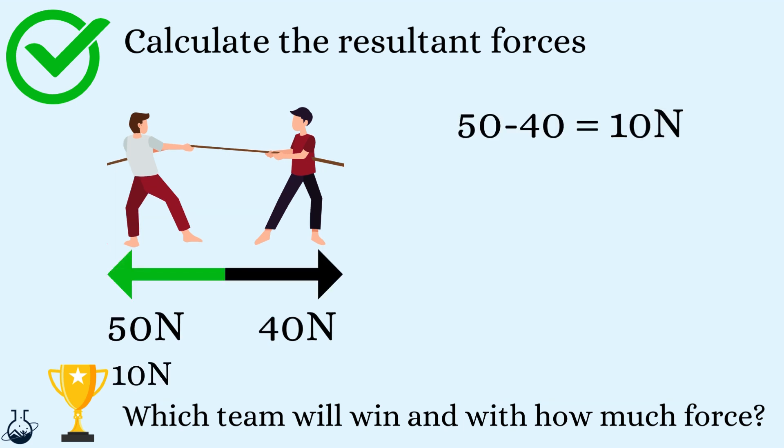The tug of war in the middle shows there is a greater force of 50 Newtons on the left and only 40 Newtons pulled to the right. So the team on the left will win with a resultant force of 10 Newtons.